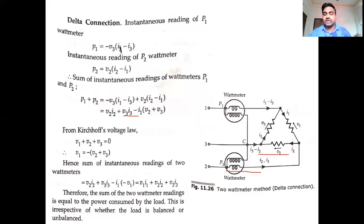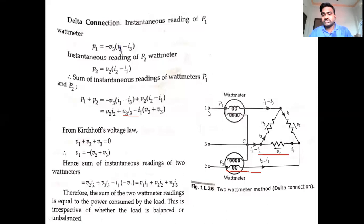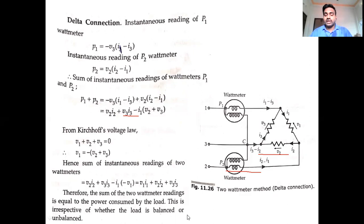Previously, we analyzed the three-phase two-wattmeter method with a star connection. Now we analyze the three-phase three-wire system two-wattmeter method with a delta connection. This is a three-phase three-wire delta connection two-wattmeter method.